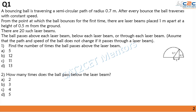A bouncing ball is traversing a semicircular path of 0.7 meters after every bounce. The ball traverses at a constant speed. From the point where the ball bounces for the first time, there are laser beams placed 1 meter apart at a height of 0.5 meters from the ground. There are 20 such laser beams. The ball passes above, below, or through each beam. Find how many times the ball passes above and below the laser beams.